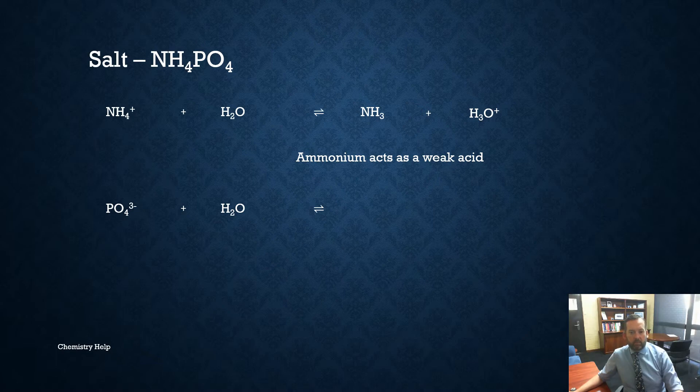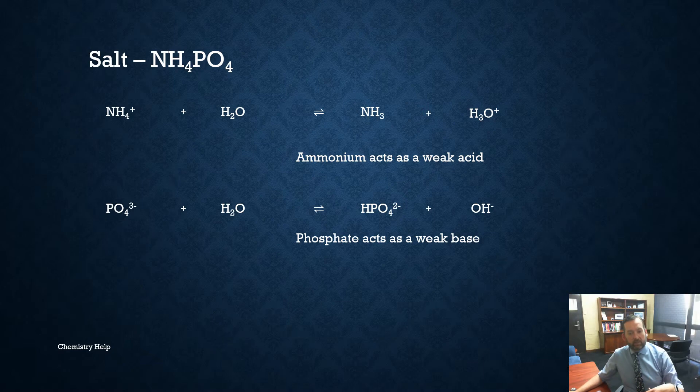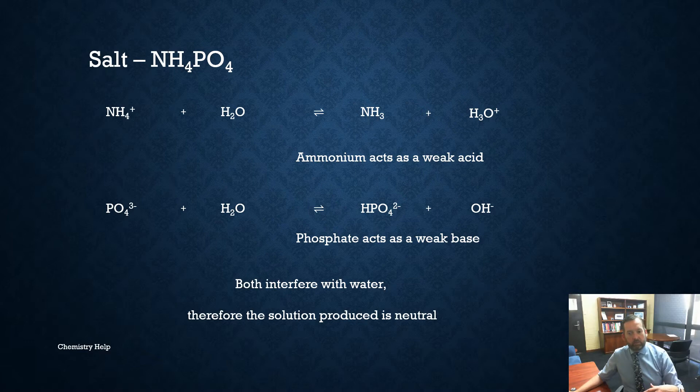What about the phosphate, what will that do? Well the phosphate can accept the proton, act as a weak base producing hydroxide ions in solution. So the first equation produces hydronium, the second produces hydroxide, so they're both producing species that would interfere. Both interfere with water therefore the solution produced is neutral.